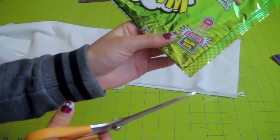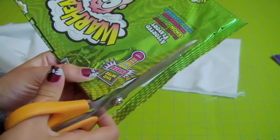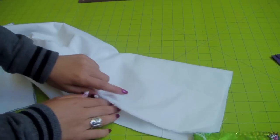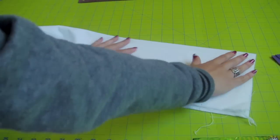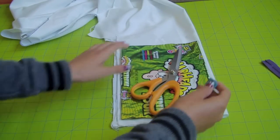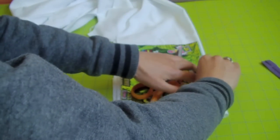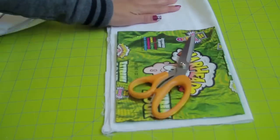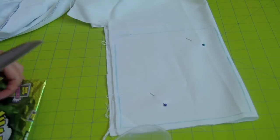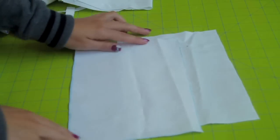You want to start by getting your wrapper and cutting the edge off. Now get your fabric and fold it in half. Place your wrapper on top of it and trace all around with some chalk. And you want to place something heavy on it to keep it in place. Now you want to get your pins and pin the fabric in place and cut around the lines. Now you have two pieces.